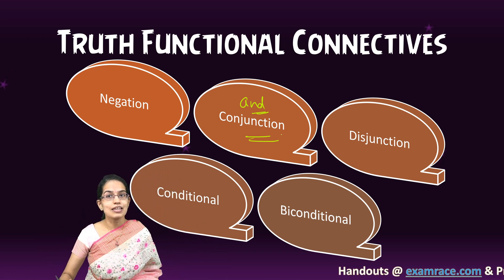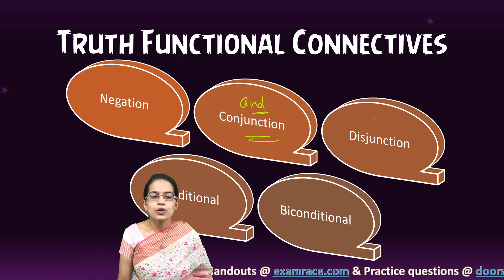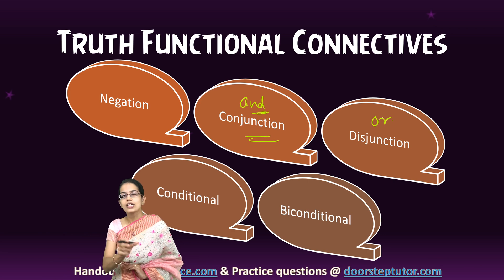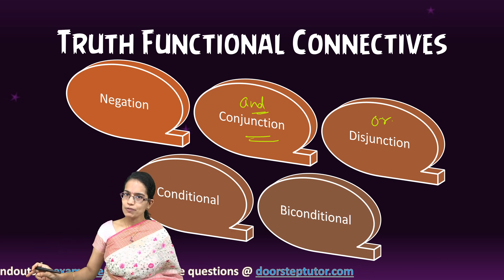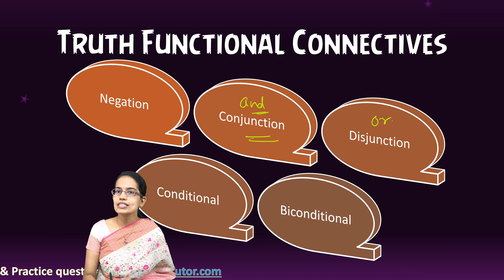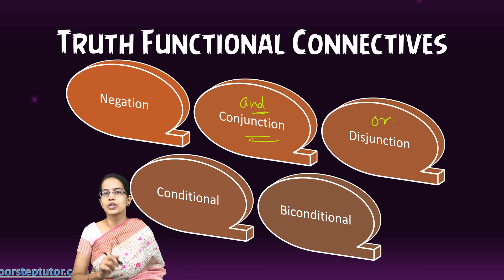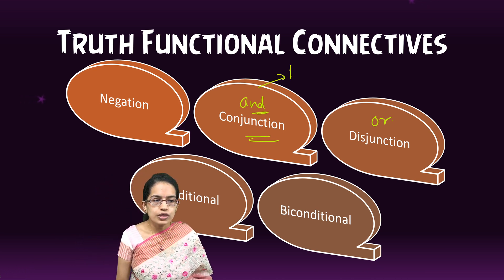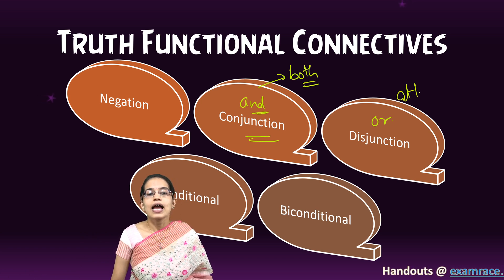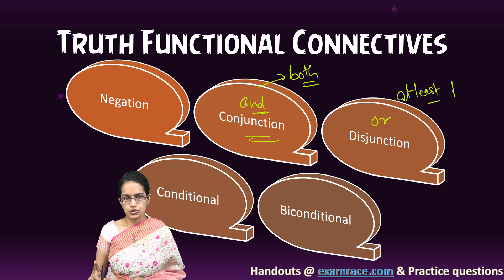Similarly, when I am talking about disjunction, I am talking about 'or.' 'It is rainy or it is cloudy.' In this scenario, at least one of the propositions must be true. So in conjunction both propositions must be true, whereas in disjunction at least one proposition must be true.